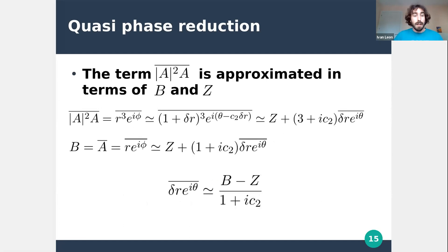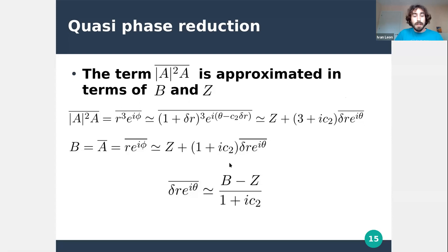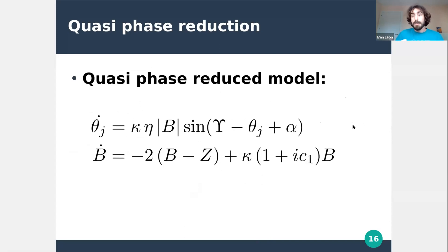We still need to compute a term involving the radial variable near the limit cycle. We Taylor-expand, approximate the radial deviations, and use the relationship between delta-r and b. Plugging these into the equations, we obtain the quasi-phase reduced model: an equation for the phases depending on b, where b is now a dynamical variable governed by its own equation.